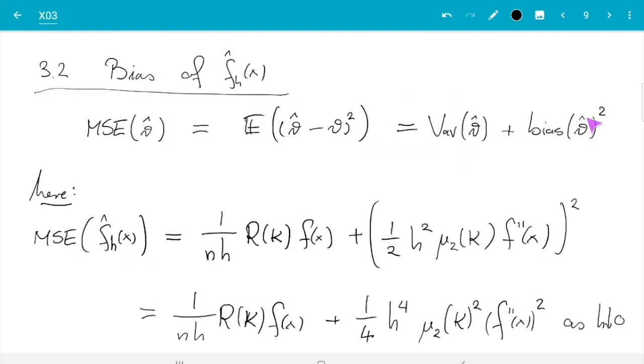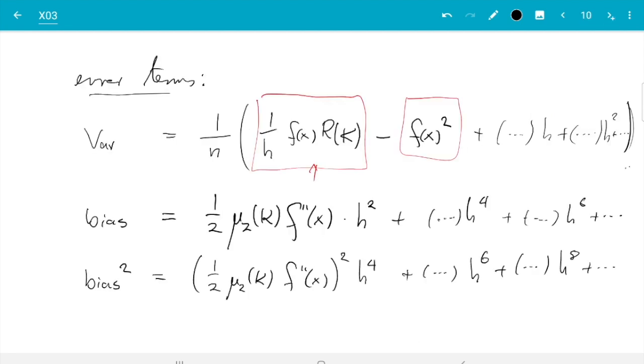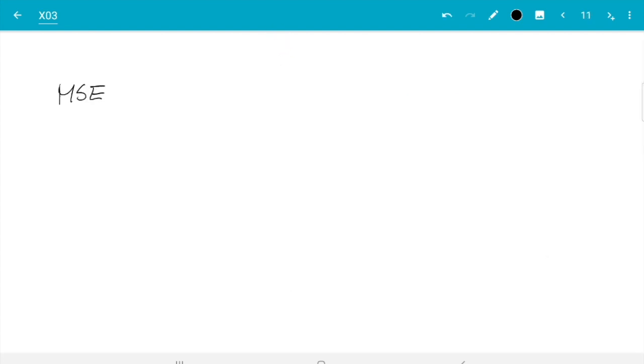Good, so mean squared error is the variance plus bias squared. We need to now deal with these terms which come from the variance which have 1 over n and then the dominating term has order 1 over h and they have all orders of h. And the terms which come from bias squared which have no n and start with h⁴.